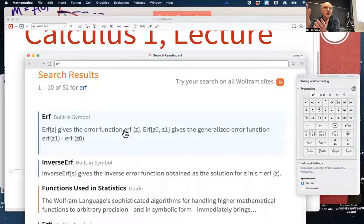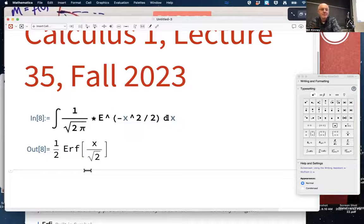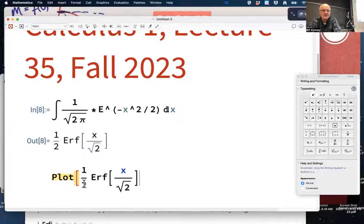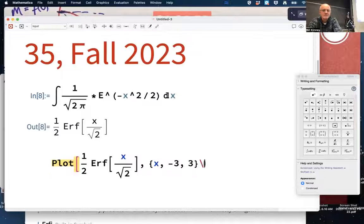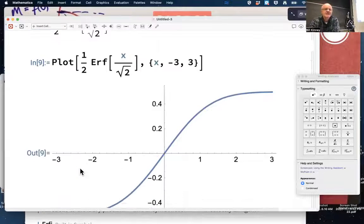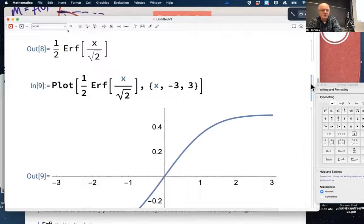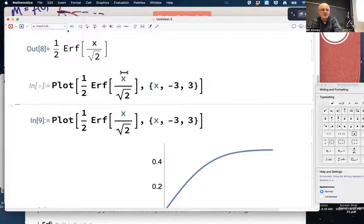What's the error function? It's a function you've never heard of before. Why is it called the error function? Because the normal curve does accurately model errors in experiments. It does accurately model errors in experiments. It's an honest-to-goodness function. You can plot it. Plot this function. There it is. You can find its values. I can say, Mathematica, what is this function? 1 half erf of x over square root of 2.